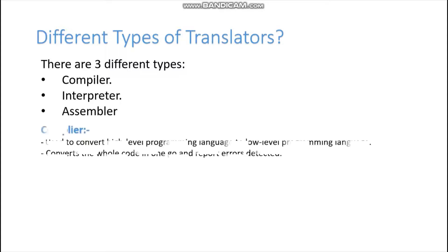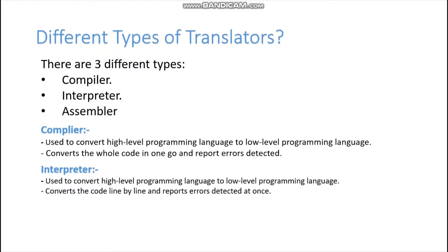Let's understand the Compiler. A compiler is a translator. It takes the source code and translates it. Now let's understand the Interpreter. The interpreter can also be used to translate code — it will be translated in a specific way.